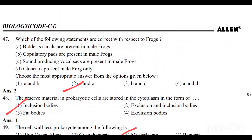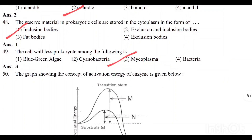Question number 47: Which of the following statements are correct with respect to frogs? A and C are correct. Option 2 is the correct answer. Question number 48: The reserve material in prokaryotic cells is stored in the cytoplasm in the form of inclusion bodies. Option 1 is the correct answer.